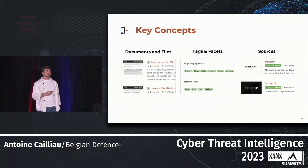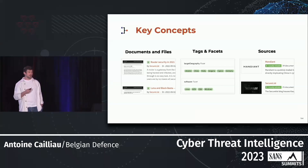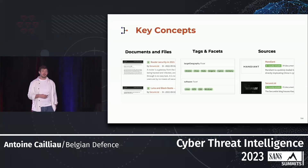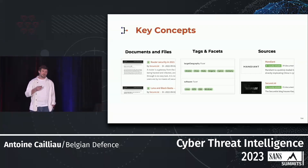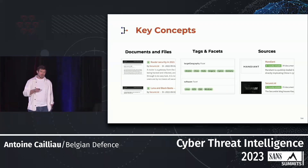The key concepts: at the core of DocIntel is the concept of a document. A document is a bunch of files that are coherent — for example, you receive a PDF report with a CSV containing a bunch of IP addresses, and you bundle all those files under a document. The document has a title, description, and tags that will help you organize the information.